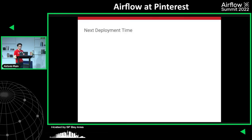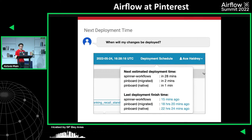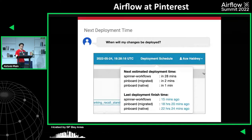Once users have landed their changes, a super common question is: when will my changes be deployed? We built a new feature called Deployment Schedule. From the upper right corner of any UI page, users can click the deployment schedule button to see the next estimated deployment time. Since Pinterest has different repos supporting different parts of the workflow, we list all relevant repos with their different deployment cadences, and users can also check links about currently deployed changes.